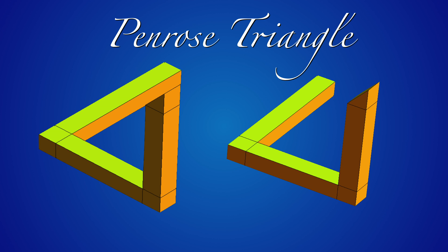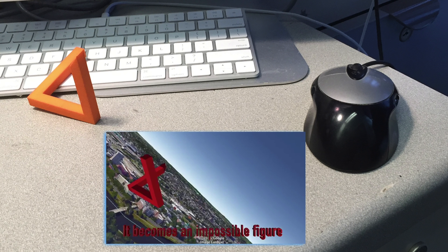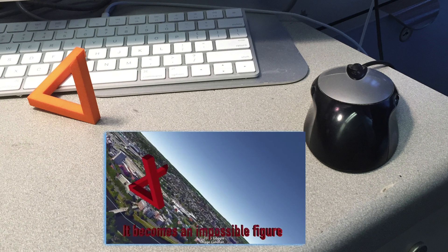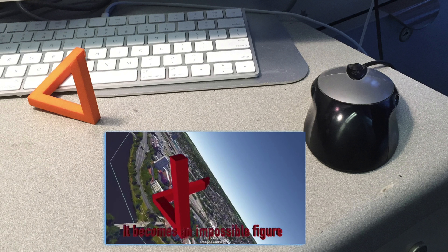So one of the simplest objects, which only needs a handful of points to be generated, is the Penrose Triangle, an impossible triangle. So here it is printed out and placed on my table, and also you can place it in Google Earth.